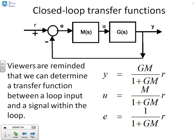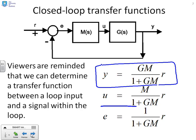The more important topic is: how do we find the steady state gain of a closed loop? We have a simple closed loop where Y of S equals GM over 1 plus GM times R of S, U of S equals M over 1 plus GM times R of S, and E of S equals 1 over 1 plus GM times R of S. We assume students are familiar with these closed loop transfer functions.